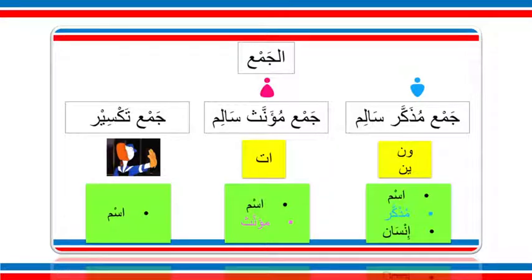Previously we learned الجمع and we said that we have three types of جمع: we have جمع مذكر سالم, وجمع مؤنث سالم, وجمع تكسير. In جمع مذكر سالم, at the end of the word we have و نا or يانا. In جمع مؤنث سالم, at the end of the word we have آتا. In جمع تكسير we don't have a specific ending.